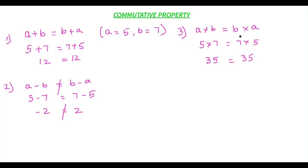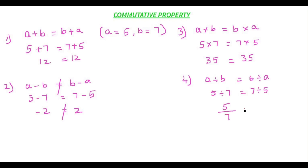Now let's check the fourth operation, division: a divided by b equals b divided by a. Using the same values: 5 divided by 7, written as 5/7, and 7 divided by 5, written as 7/5. These two are not equal because the numerators and denominators are swapped, so commutative property does not hold good for division.